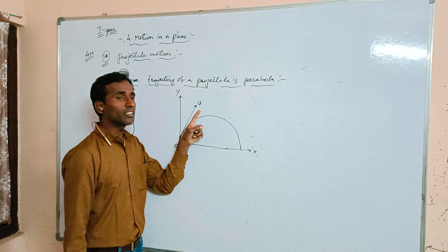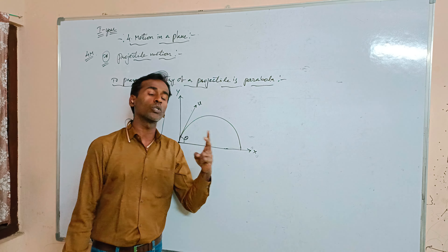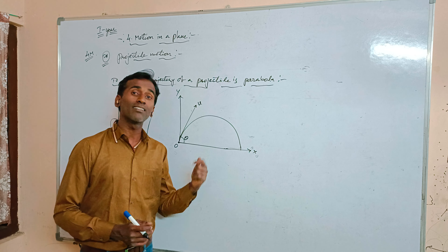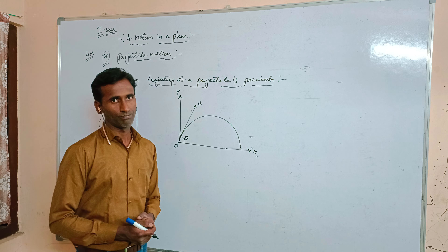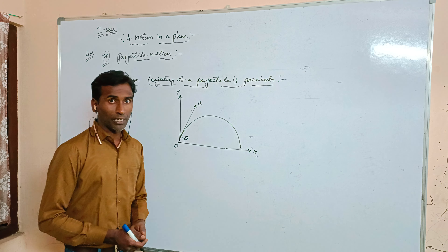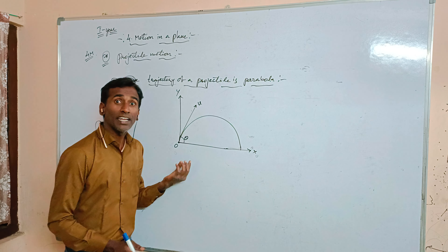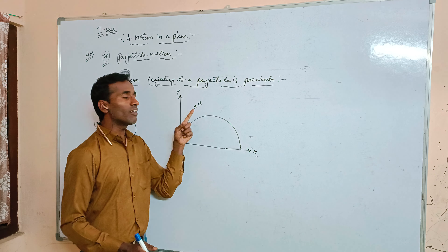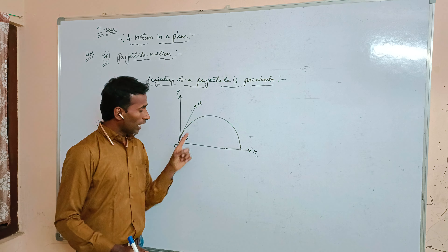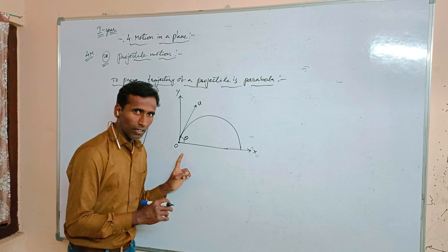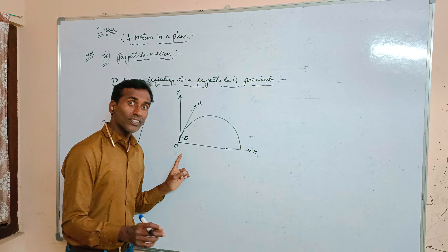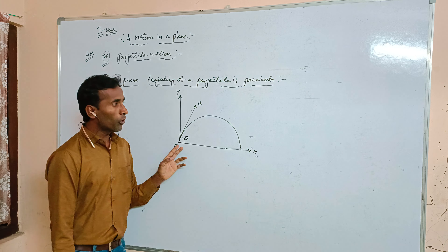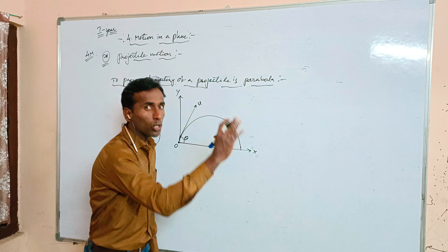This initial velocity u can be resolved into two rectangular components — one is the horizontal component and another one is the vertical component. Let us consider we are taking one object thrown upward with initial velocity u and with some angle theta, where theta is the angle of projection and O is the point of projection, and the body will be travelling along the parabolic shape.